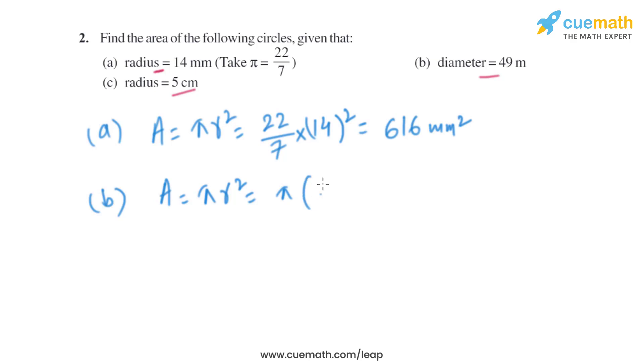So it will become π(d/2)² or we can say 22/7 × (49/2)². On solving this we will get 22/7 multiplied by 49/2 × 49/2, which is same as 1886.5 square meters. So that will be the area of the second circle.